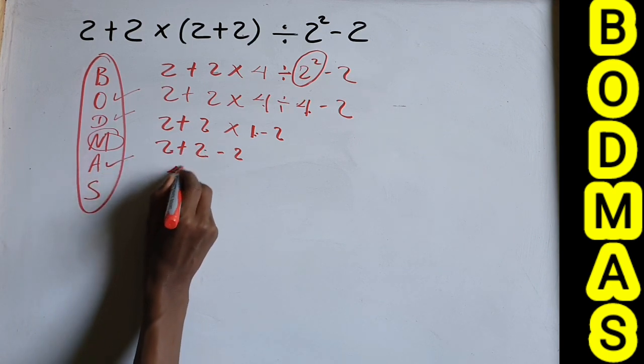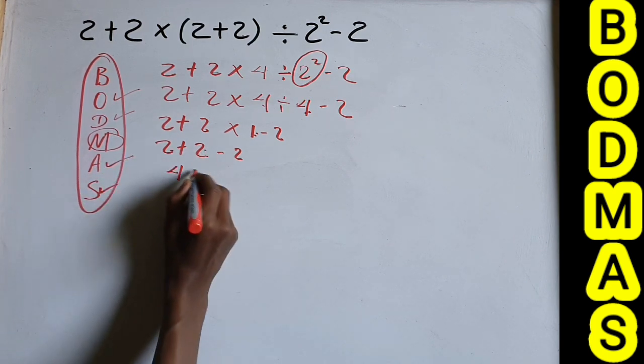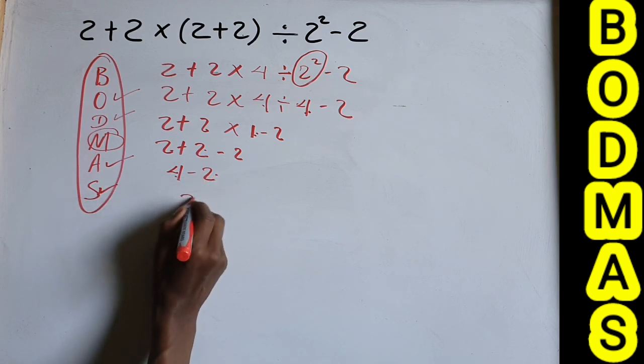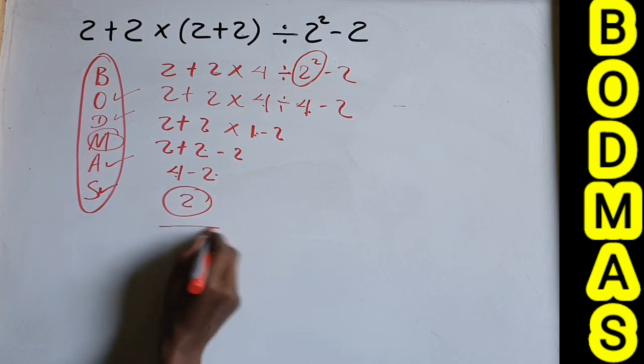For Addition: 2 + 2 equals 4. Then Subtraction: 4 − 2 equals 2. The final answer is 2.